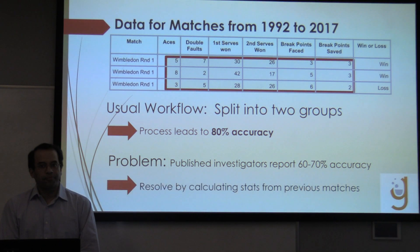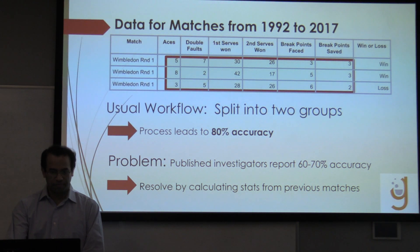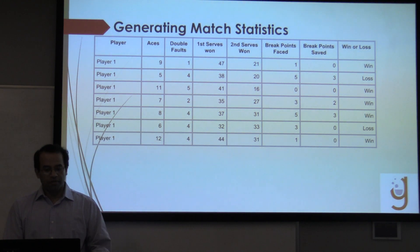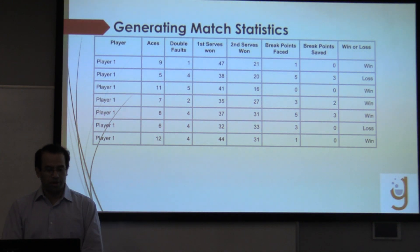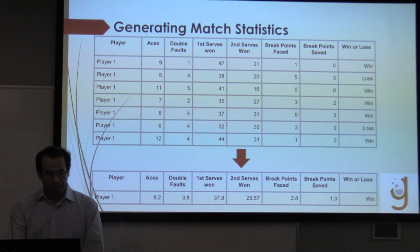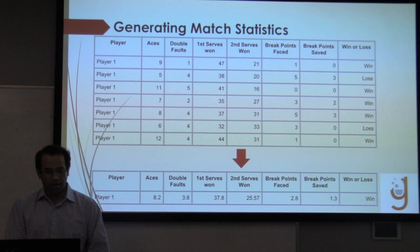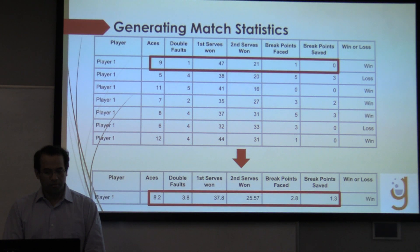We can resolve this by generating stats from previous matches of particular players. First, we gather the statistics for any particular player as shown in the first table. For one player, statistics such as aces, double faults, and service points won are gathered for each match. For the first match depicted in the first row, the stats are replaced by an average from the remaining rows — the red box on top is replaced by the averaged statistics from previous matches, shown on the bottom.